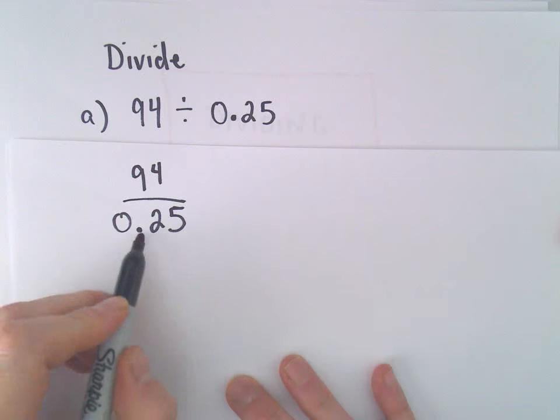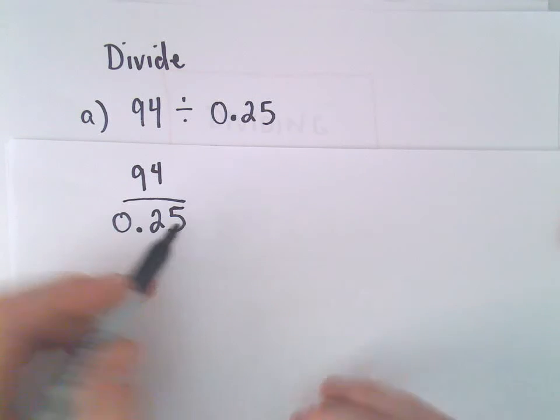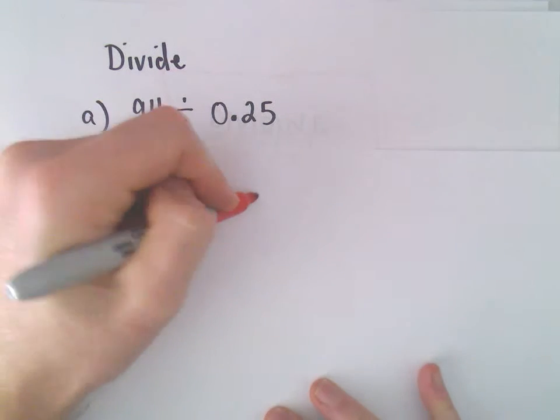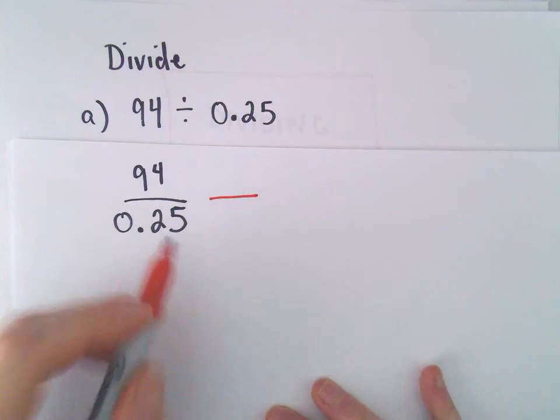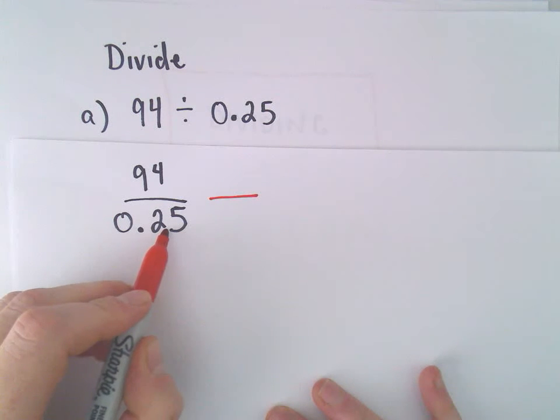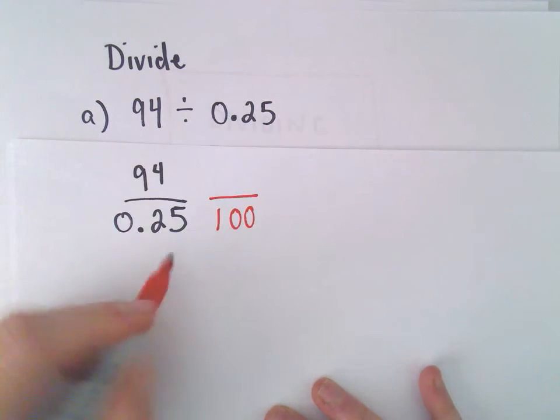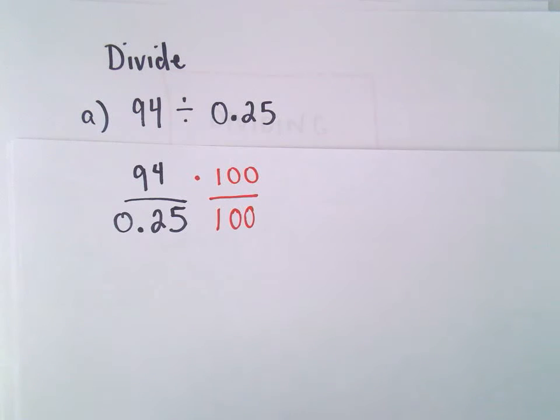What I would like to do is move it two places to the right by multiplying by an appropriate number. To move it two decimal places, if you multiply by 10 it moves one decimal place. If we multiply by 100, it will move the decimal place twice. But of course, if we do it in the denominator, we also have to do it in the numerator.